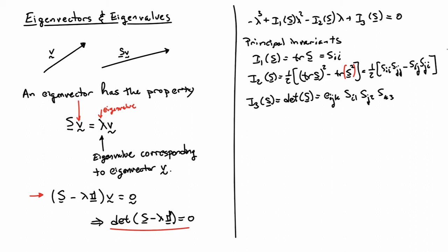And the third principal invariant, which is called I3, is the determinant of s. So the coefficients depend on s. And it's a third order polynomial. So it's going to have three roots to it.